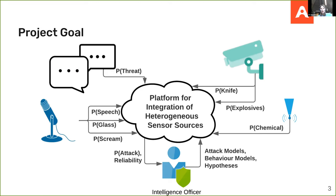The goal of this project was to create a platform for integration of heterogeneous sensor sources — whether information is observed by a surveillance camera, signals from a microphone, other signal sources, or even social media viewed as another type of sensor. Given all these different signal observations, the idea is to make an inference of the probability that it's an attack or just a normal situation, and if it's an attack, what kind of attack.